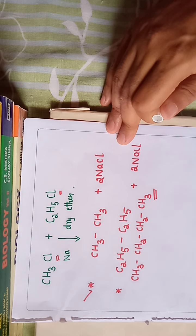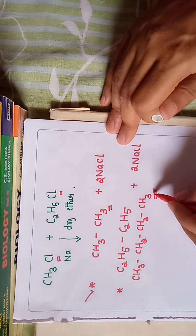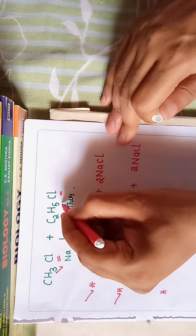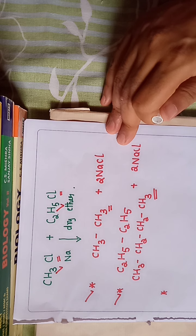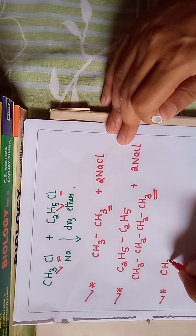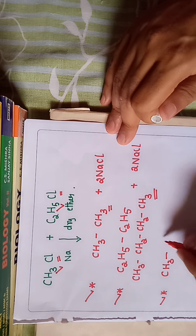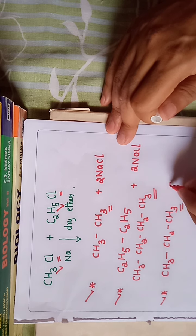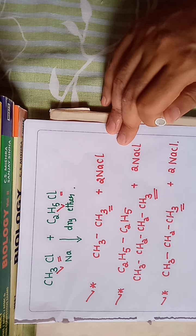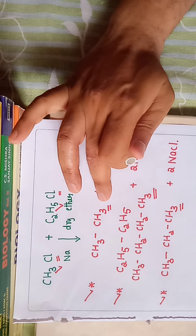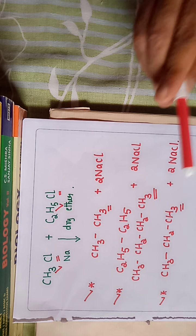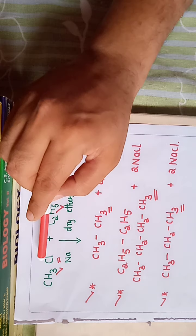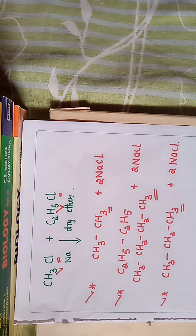So the first product is ethane (two carbons) and the second product is butane (four carbons). Now consider a third case: if one methyl chloride and one ethyl chloride both participate in the Wurtz reaction, the third expected product is CH3 from methyl chloride joined with the ethyl group CH2CH3 — giving propane, a three-carbon alkane — plus sodium chloride. So in this reaction we can expect three products: ethane if only methyl chloride reacts, butane if only ethyl chloride reacts, and propane if both alkyl halides participate in the Wurtz reaction.